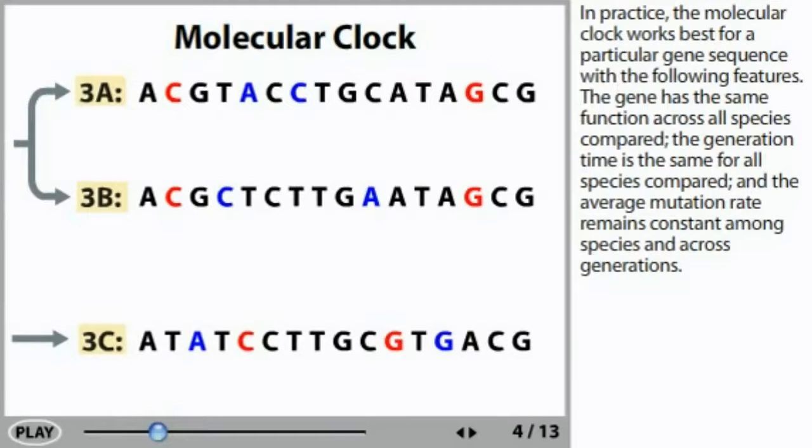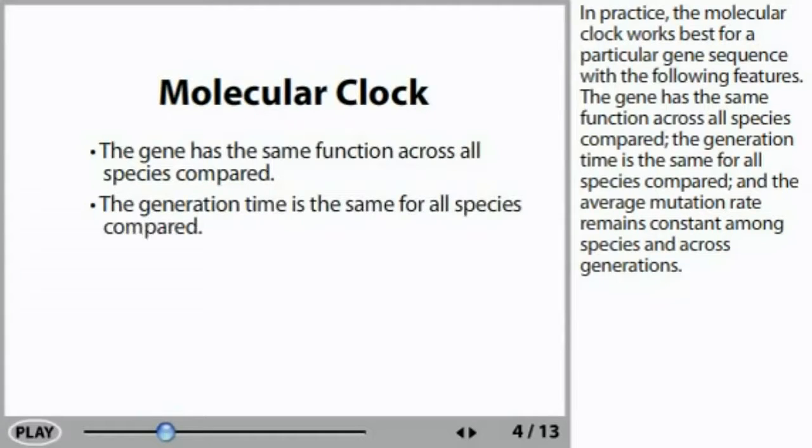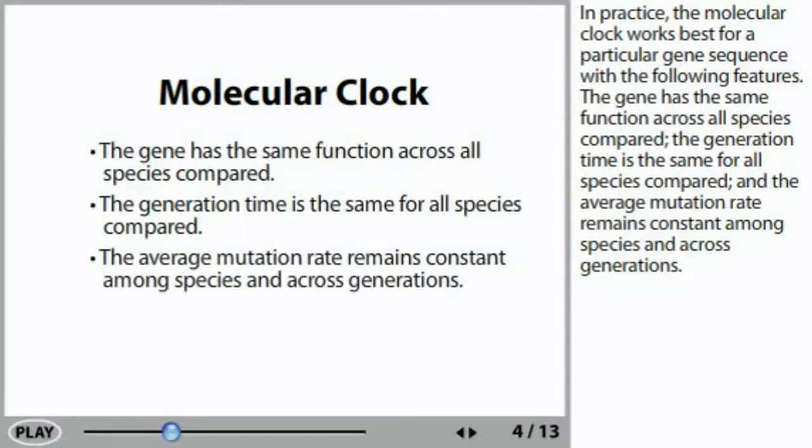In practice, the molecular clock works best for a particular gene sequence with the following features. The gene has the same function across all species compared. The generation time is the same for all species compared. And the average mutation rate remains constant among species and across generations.